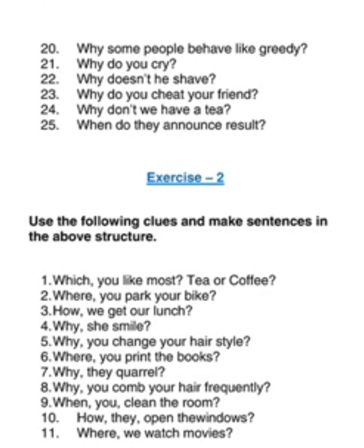Why do you cry? Why doesn't he shave? - With 'he' you get 'doesn't'. Why do you cheat your friend? Why don't we have tea? When do they announce the result? - It's a regular action; they announce at one particular time and you're asking about that time. To summarize: with 'who' you do not get do/does/don't/doesn't, but for all other WH questions you do. Start with WH, immediately put the helping verb, then the subject, then the rest. That completes exercise one.